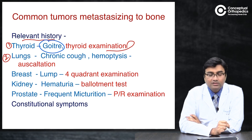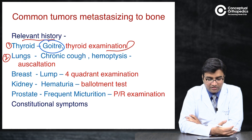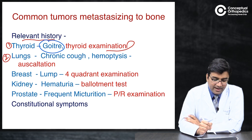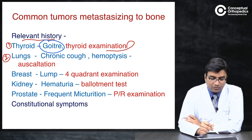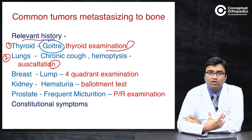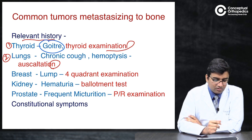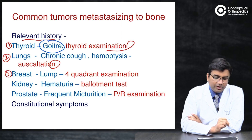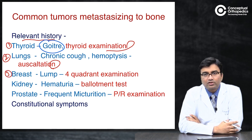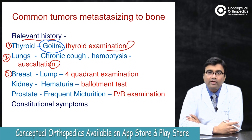For lungs, ask for a history of chronic cough or hemoptysis, which are the most common presenting features. On examination, auscultate for reduced air entry or consolidation on percussion. For the breast, ask whether the patient performs self-examination, and on examination assess all four quadrants of the breast for any lump or swelling.